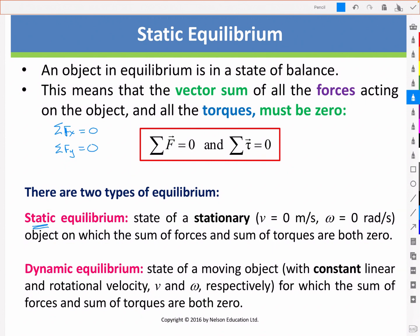We also looked at a few examples for dynamic equilibrium, where you will recall that Newton's first law also indicated that an object in motion stays in motion if there's no net force acting. In other words, the sum of the forces is zero for an object moving at constant velocity.